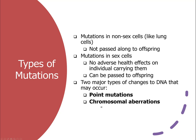Most mutations you inherit from your parents will have no effect, and you won't even know about it. The two major types of changes to DNA are point mutations and chromosomal aberrations — which can also be called chromosomal rearrangements. Mutation effects could occur in non-sex cells such as lung cells, causing lung cancer or skin cancer. These aren't passed on; however, propensity for these types of cancers may be genetically passed.